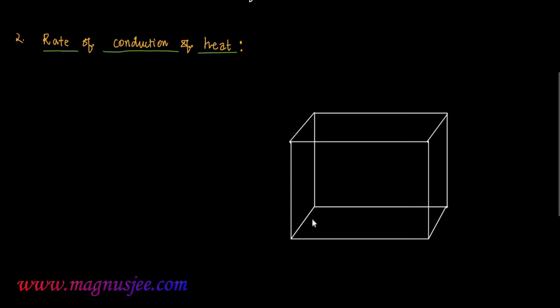Rate of conduction of heat. This is a solid slab. The temperature of face 1 is theta 1 degrees C, and the temperature of face 2 is theta 2 degrees C. We assume that theta 1 is greater than theta 2, meaning the left end is the hot end with respect to the right end of the slab.